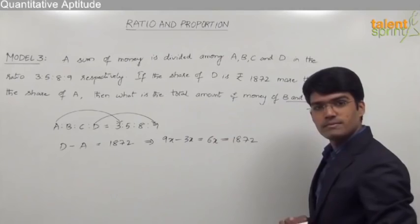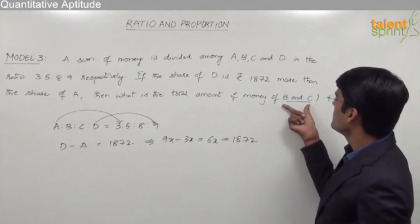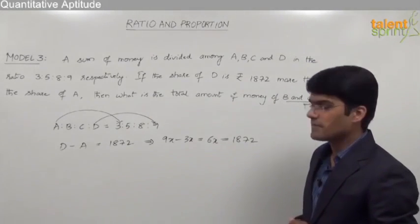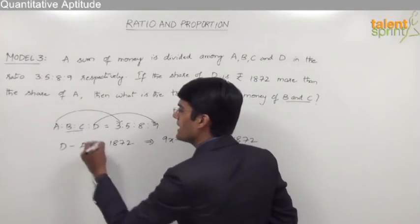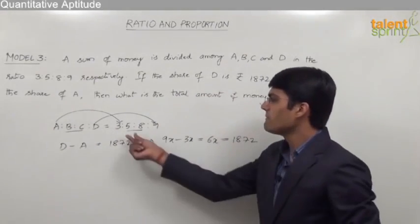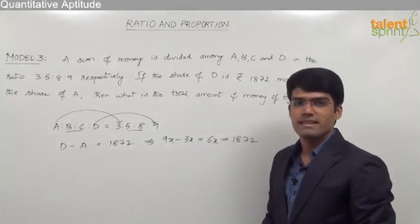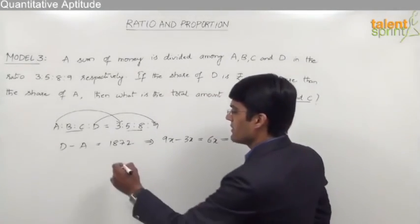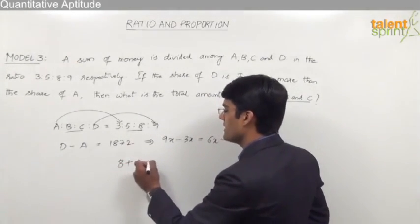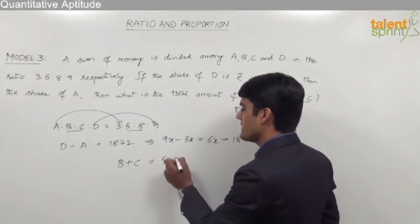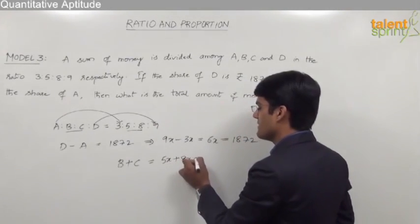And we are supposed to find out the total amount of B and C. Again from the ratio, we know that the total of B and C will be 5 parts plus 8 parts, that is equal to 13 parts.